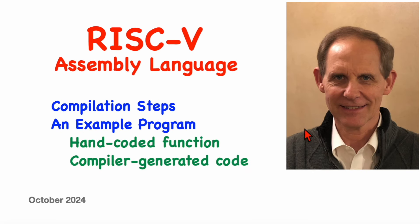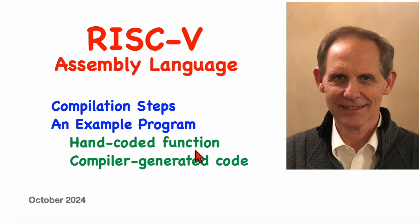Welcome to another video in a series on the RISC-V architecture and its assembly language. In this video, I'll be working through a non-trivial coding example. First, I'll talk about the steps involved in building an assembly language program, and then I'll code a small function in assembly code. Finally, I'll take a look at the code generated by the compiler for the same function and compare it with my version, and we can see some interesting differences.